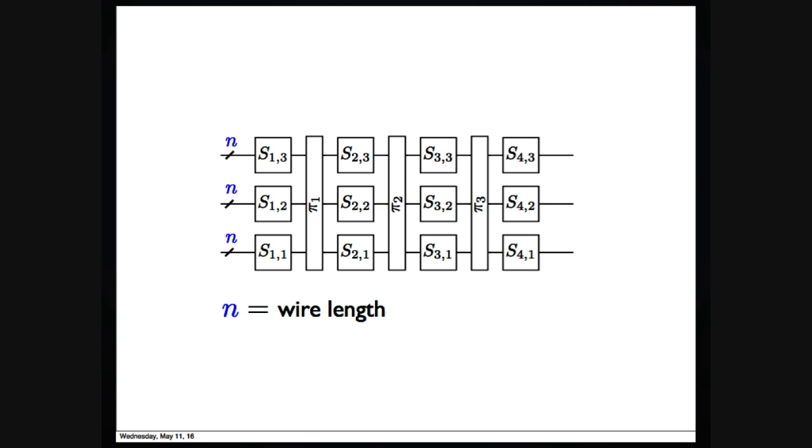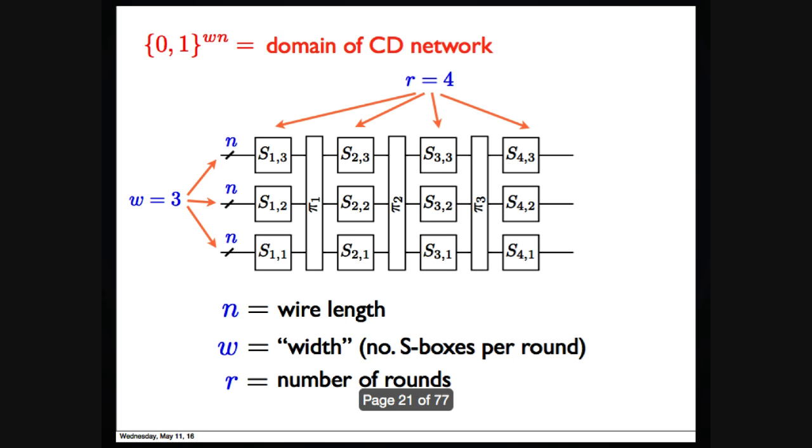Some more notation. In this picture, it's an example of confusion-diffusion network. Each line would be an n-bit value. So the S-box would be a permutation on n-bit. You should think n as the security parameter in our construction. In each round, there would be W boxes in parallel. W is called width. The number of rounds is named R. So the domain of the CDN is a permutation over W×n-bit. The diffusion box is also a permutation over W×n-bit.